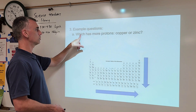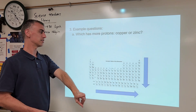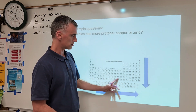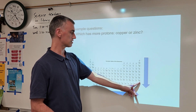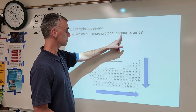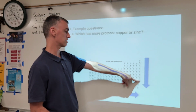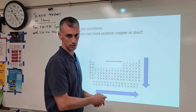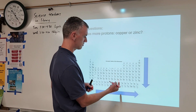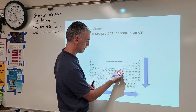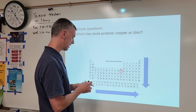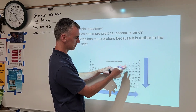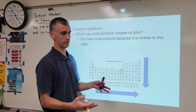Let's practice. Which of them has more protons — copper or zinc? Remember, this pattern increases as you go down and toward the right, so the closer to that corner, the more protons. Looking at copper and zinc, zinc is clearly the closer of the two to that corner. They're both the same distance from the top, so it comes down to which is further right — and that's zinc.